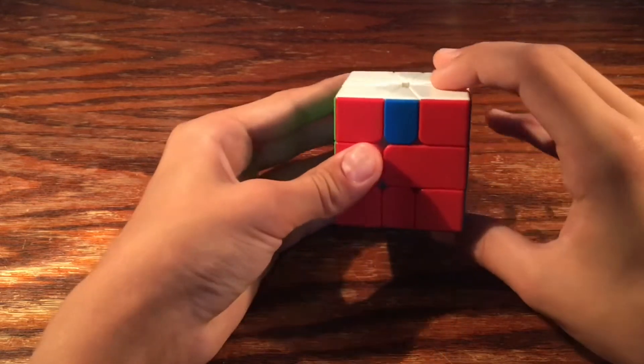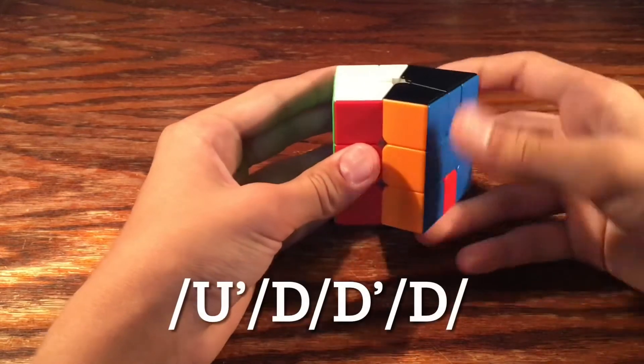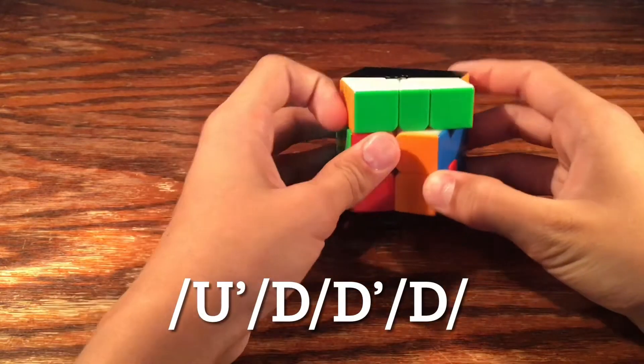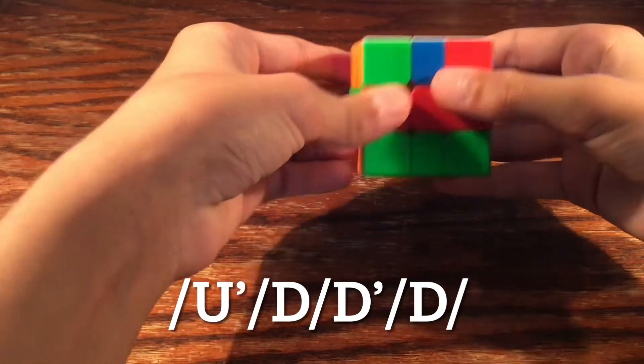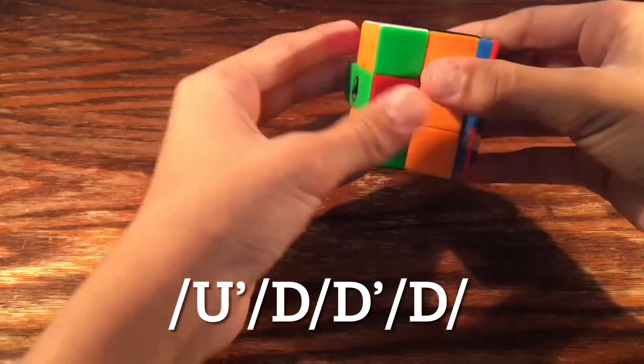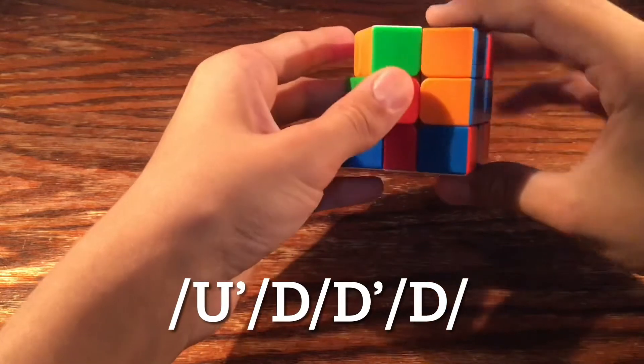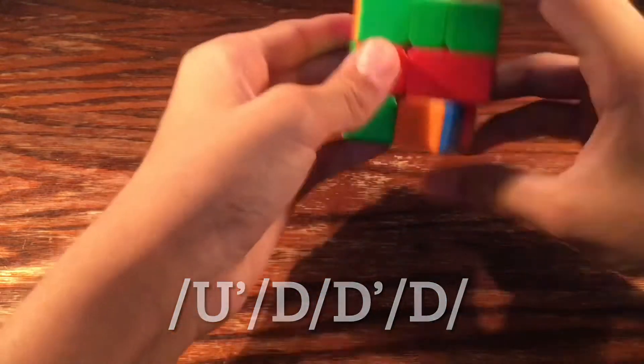So we'd slice, we'd have these two right here, we'd slice up, do U prime, slice, D, slice, D prime, slice, D, slice.